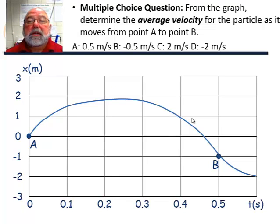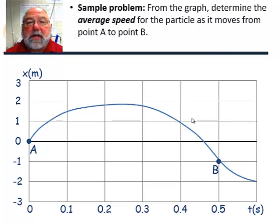Okay, here's your multiple choice question. From the graph, determine the average velocity for the particle as it moves from point A to point B. Okay, welcome back. Let's move on.